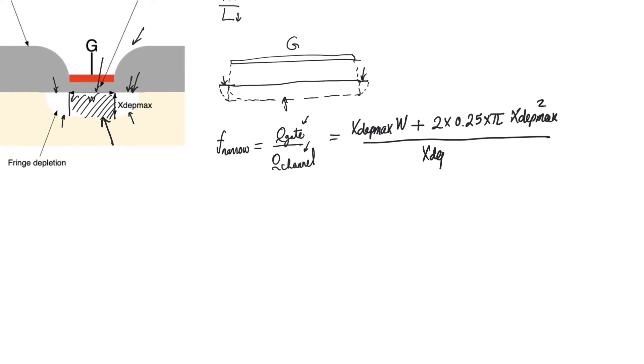Doing a little bit of simple algebra, this is going to be one plus pi over two into X depletion max over W. So it is obviously a function of X depletion max as well as W.